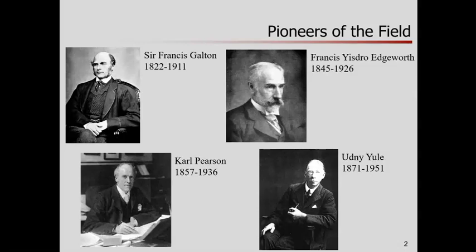Broadly, the history of statistics is its own field. A number of pioneers dealt with things like correlation and regression, but the history of statistics is littered with terrible people who had awful ideas. Galton was largely the originator of the ideas of correlation and regression. Pearson, his student, and Edgeworth also worked in related areas. Except for Yule, these were eugenicists — Galton is associated with founding the eugenics movement, which has had terrible repercussions throughout history.